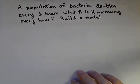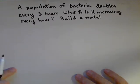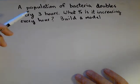So in this video, we're gonna talk a little bit about doubling time and how we can build a model actually very quickly when all we know is the doubling time. So we've got a population of bacteria that doubles every three hours. So what percent is it increasing every hour? So it's kinda like we've got a compounded rate, but we wanna know what its annual rate is.